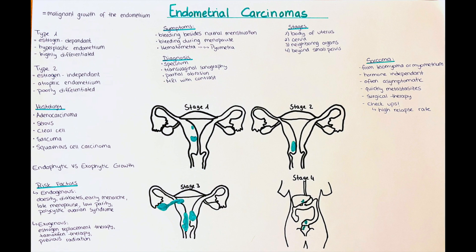In surgical therapy for uterine sarcoma, usually the uterus as well as the fallopian tubes and ovaries are removed, and in some cases also the regional lymph nodes. The extent of surgery depends on the stage of the cancer. In women who wish to have further children, fertility-sparing surgery can be attempted, at least in early stages — in stage 1, the ovaries can remain. After successful therapy, regular checkups are important for several years, as around 50 percent of patients treated for stage 1 sarcoma will experience a relapse.